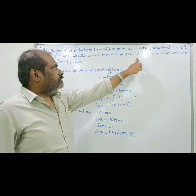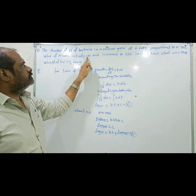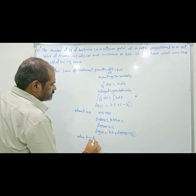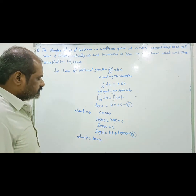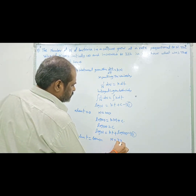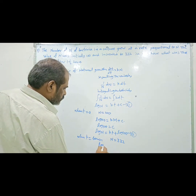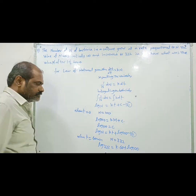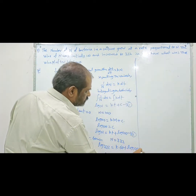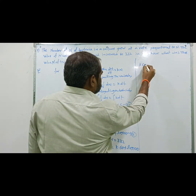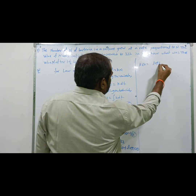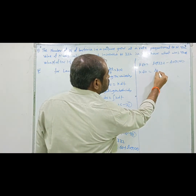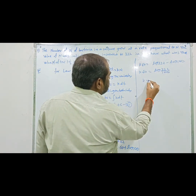After one hour, n increased from 100 to 332. One hour equals 60 minutes, so t = 60 and n = 332. Substituting into equation 2: log 332 = k(60) + log 100. Solving for k: k × 60 = log 332 − log 100. Using the logarithm rule log a − log b = log(a/b), we get k × 60 = log(332/100).